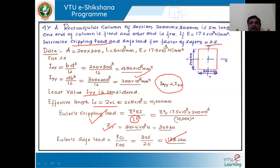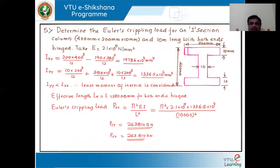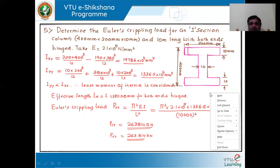This is a straightforward problem, but you need to find the values of moment of inertia. If the area is not given, you have to find the area, and then according to the end condition, take the effective length. Next, for an I-section — which is symmetrical about both the y-axis and x-axis — it will be easy to solve the problem.